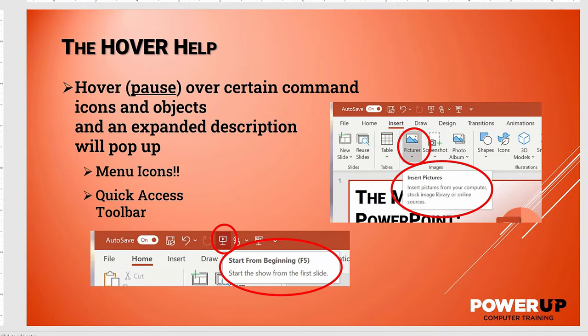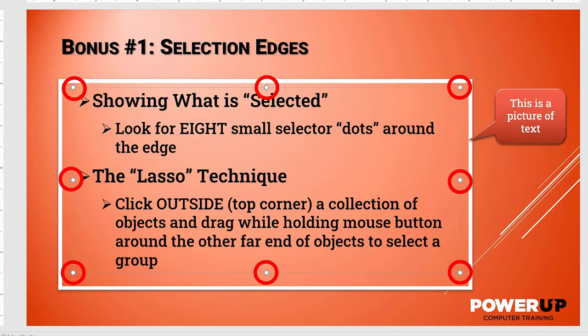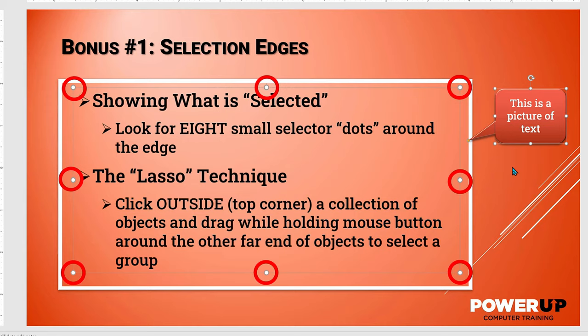Let's move on to some on-screen visual clues of selection edges. When an object is selected, there are visual clues of grab handles for you to resize the object. Once selected, eight small indicator dots will show up around the edge of the selected object. I can click on the edges to see it — take a look as I select the callout box. This is a picture of text and you'll see the eight corner dots.